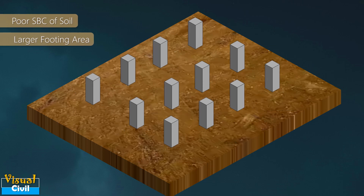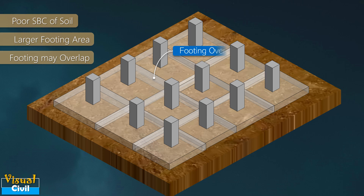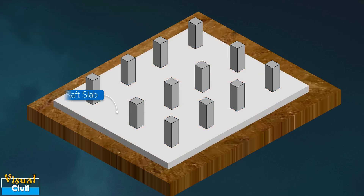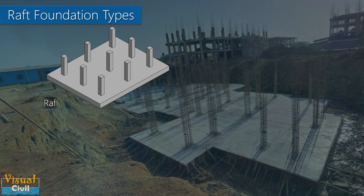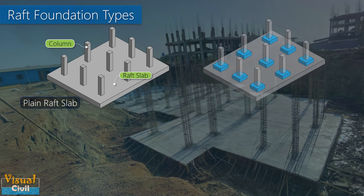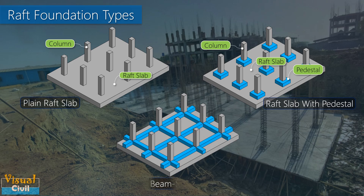In cases where the bearing capacity of the foundation soil is low, such as black cotton soil, the size of isolated footings will be comparatively larger and there may be chances of overlapping, which may lead to using a raft foundation. Generally, raft foundations can be constructed as plain raft slab, raft slab with pedestal, and two-way beam-slab raft foundation.